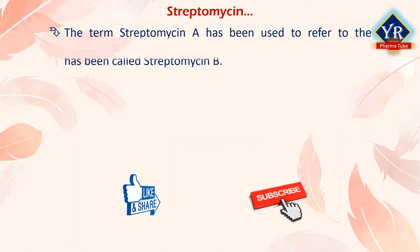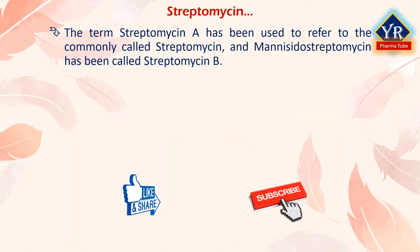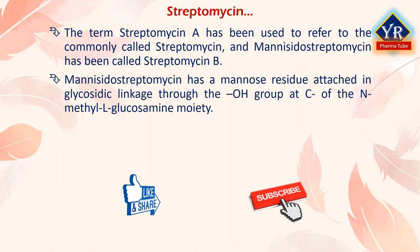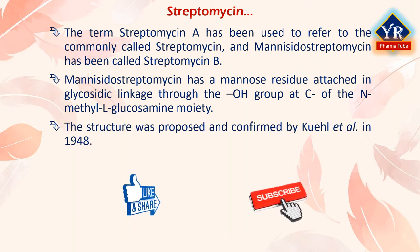The term streptomycin A has been used to refer to what is commonly called streptomycin, and mannosidostreptomycin has been called streptomycin B. Mannosidostreptomycin has a mannose residue attached in glycosidic linkage through the hydroxyl group at carbon of the N-methyl-L-glucosamine moiety. The structure was proposed and confirmed by Quiel et al. in 1948.